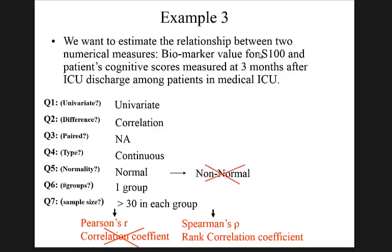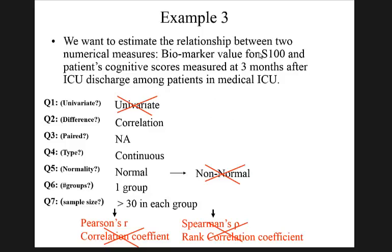If the outcome is not normal, use Spearman. If it's not an RCT and we worry about confounding — for instance, patients with higher biomarkers may be older — we want to adjust for age. In that case, use regression: continuous outcome, no repeats, so linear regression.